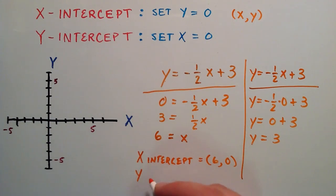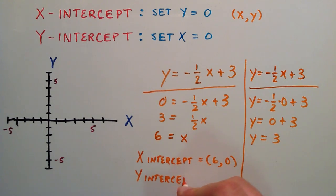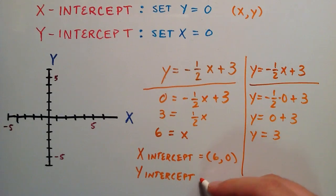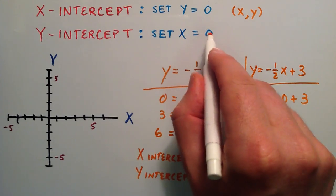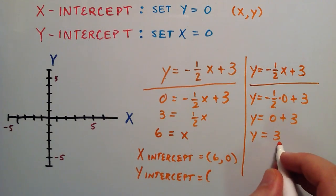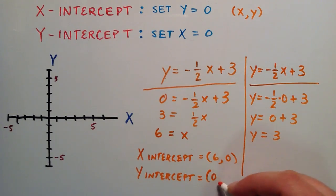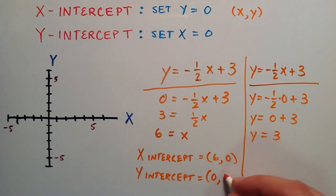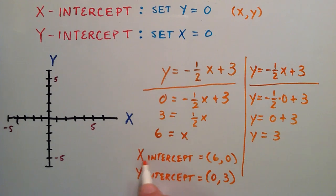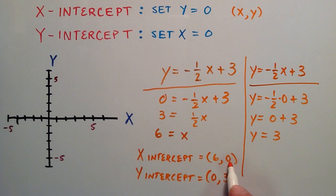So y equals 3 is the y-component of our y-intercept. The x-component is 0, since we entered 0 for x to get our corresponding y-value. So the y-intercept is the ordered pair (0, 3).